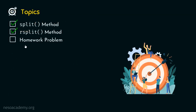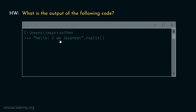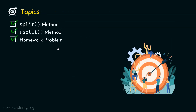Now let's move on to the homework problem of this presentation. The question is: what is the output of the following code? The method is R-split and no argument is provided to this method. Your job is to determine the output. So, we are done with this lecture — we have understood the split method, the R-split method, and how R-split differs from split in that it always reads the string from the right. Thank you for watching this presentation; I will see you in the next one.